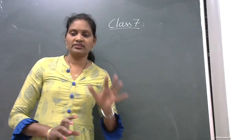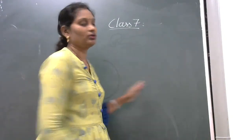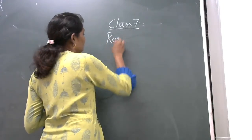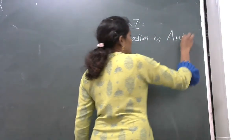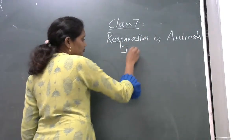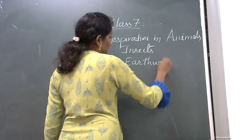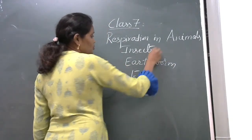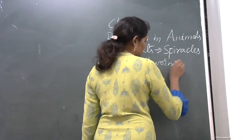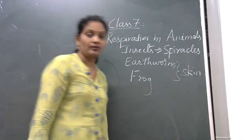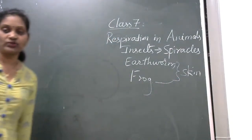Okay, so from here I think the problem is here only, but we will start and we will complete it today. So we need to cover the respiration of animals. Already we have learnt about the insects, then about the ovum, then the frog. So insects have spiracles and they respire with the skin. And next is the frog. The frog and the ovum respire with the skin.